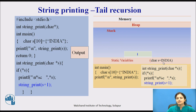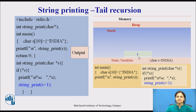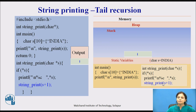Now in the function when it is pointing to 'India,' I will be there first. It will ask to print it. In the stack, it will be active when we are executing this program. The first case is that your pointer is showing that I is the first character. Immediately it will print I. Then the next step is calling string print S plus 1 — we are incrementing the pointer and again calling the same function string print. It will go to the next character N, and then it will print N.